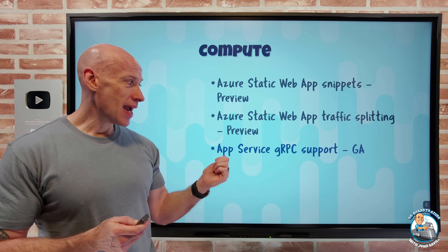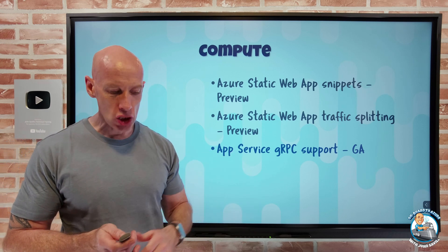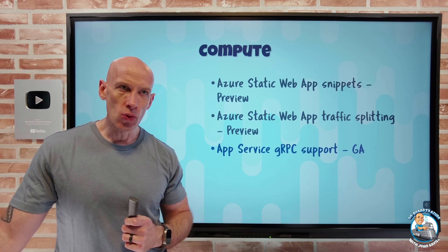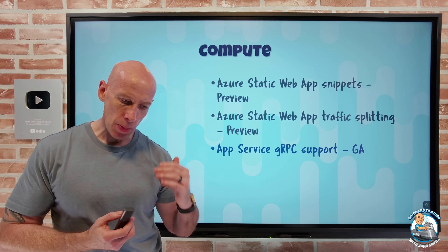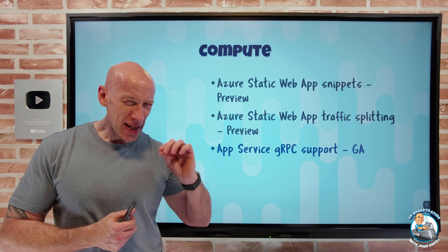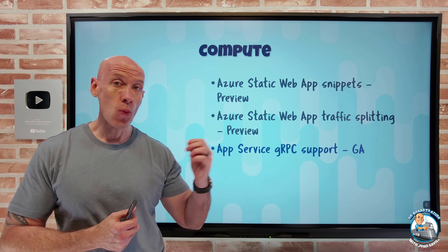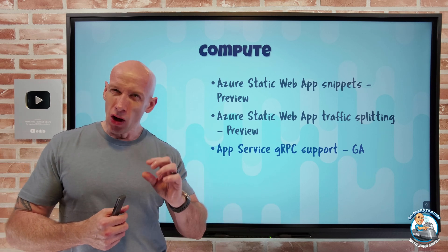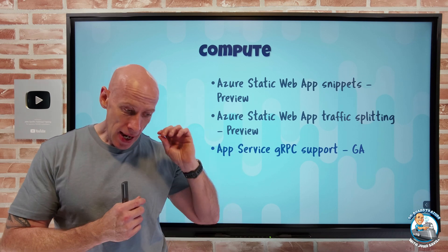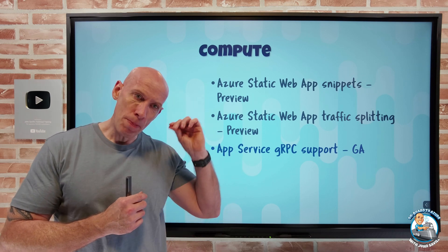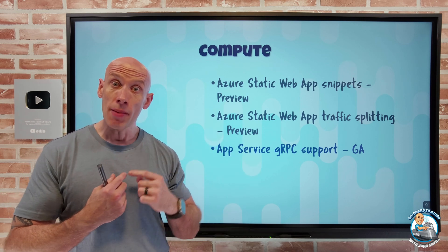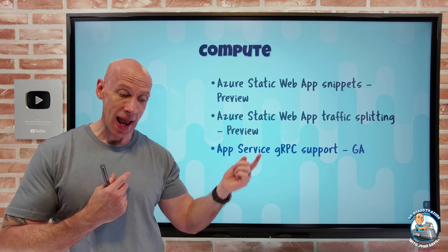App Service now has gRPC support in GA. gRPC remote procedure calls have the benefit of being based on HTTP/2 for client-server communications. You typically see this in mobile and web applications. It gives a lot of benefits — for example, multiplexing, where I can send multiple parallel requests over the same connection, and even do simultaneous request and receive.